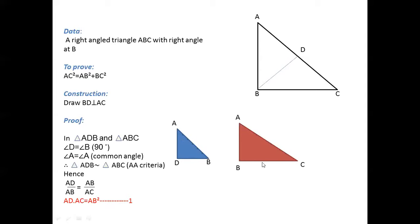Now we have to consider the BC line and AC line, means base and hypotenuse. What we have to do next is base and hypotenuse. So cross multiply: AD into AC will be equal to AB squared. So let's consider this equation 1.